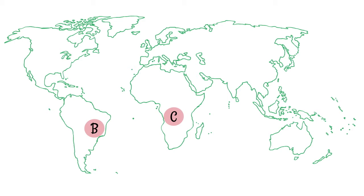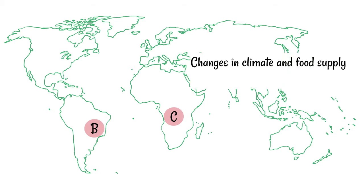This happens because there are changes in climate, food supply, and predation in each of these different places. There are new selection pressures, and those new selection pressures differ from place to place.